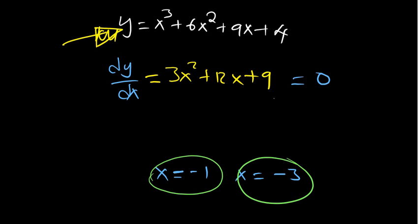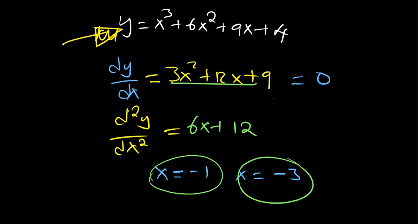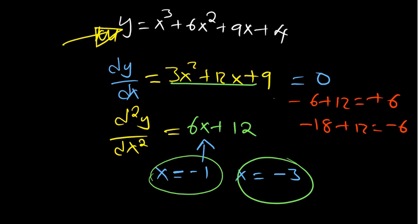Let's use the second derivative test. Differentiating the first derivative gives us 6x + 12. Substituting x = -1: we get -6 + 12 = positive 6. Substituting x = -3: we get -18 + 12 = negative 6. Since x = -1 gives a positive second derivative, that is a minima point. Since x = -3 gives a negative value, that is a maxima point.